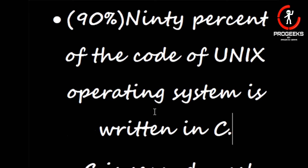90% of the Unix operating system is written in C. Unix operating system ke code C language mein likhe gaye the.